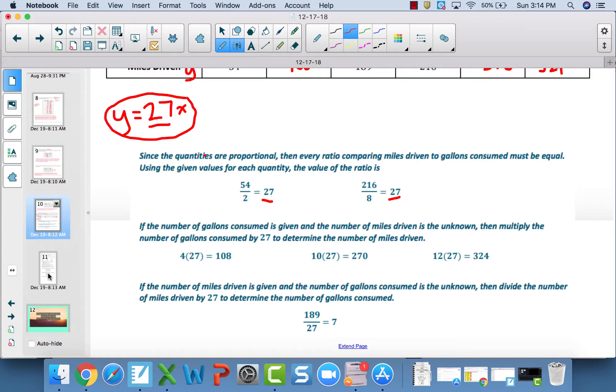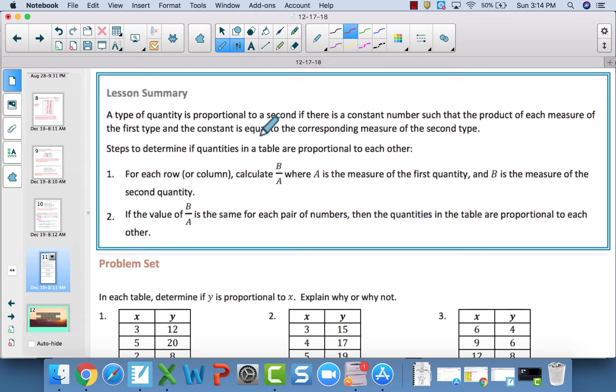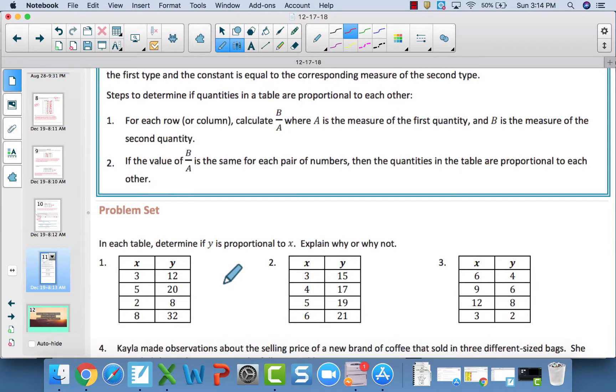For the lesson summary, a quantity is proportional if there is a constant number that you are multiplying by. Very basic. It needs to be the same number you are multiplying x by to get to y every single time. If just one row is different, it is not proportional. It does not matter what order it's in. It can be increasing, then decreasing, whatever. But that number to get from x to y needs to be the same constant number, the same constant of proportionality.